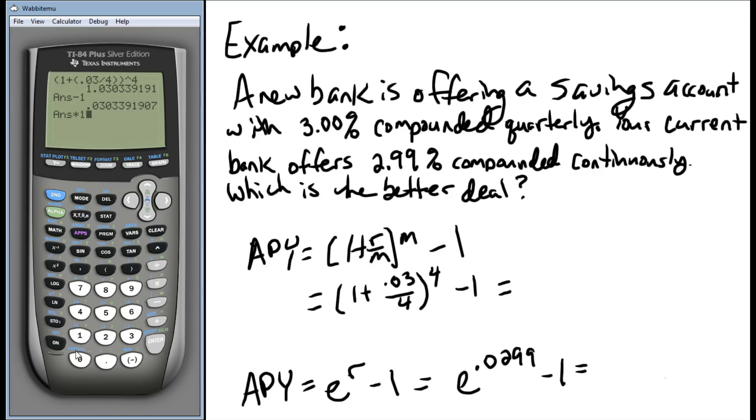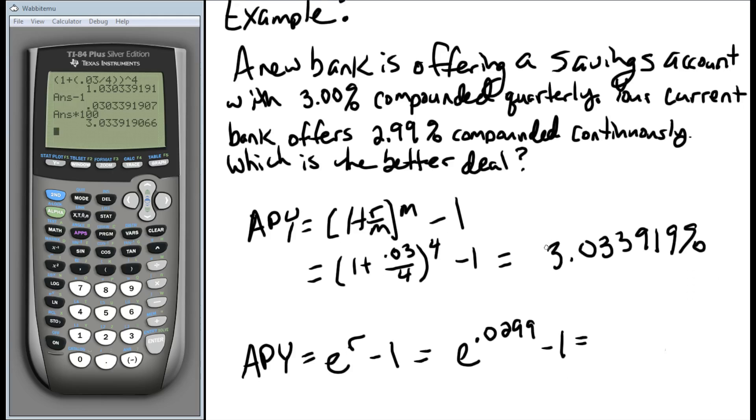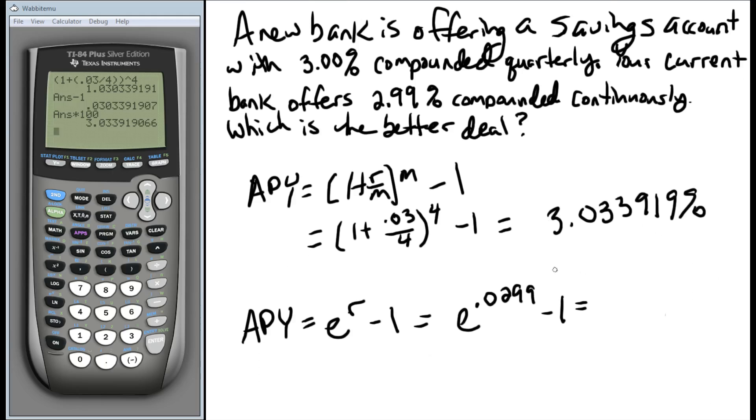So let's multiply this by 100 to find out what our percentage is. So 3.033919%. That's plenty of decimal places, probably more than we need in the long run, but better be safe than sorry, have some extras.